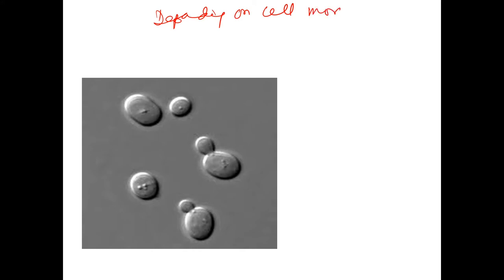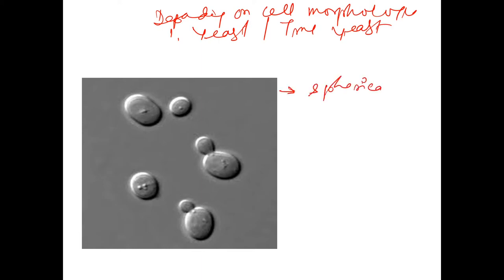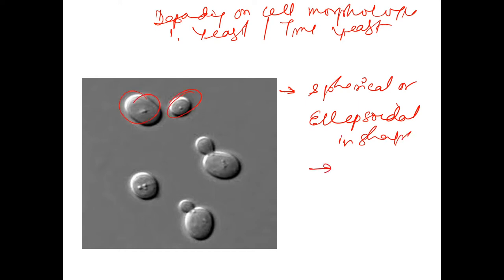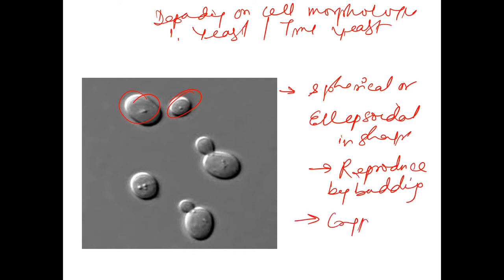True yeast is spherical or ellipsoidal in shape. It reproduces by budding. The example to remember is Cryptococcus neoformans.